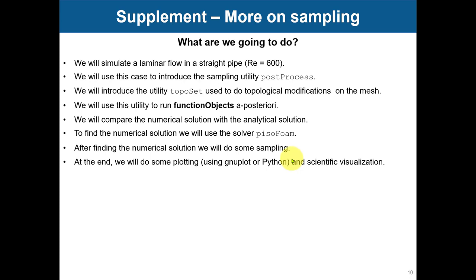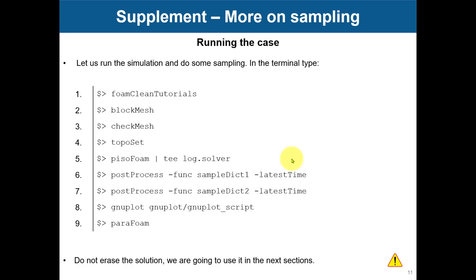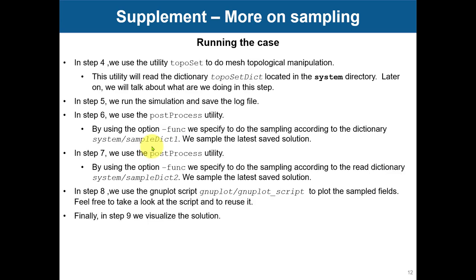You can obtain those surfaces using any software, or even ISO surfaces that you can obtain with functional objects — that is in the next supplement. So see that you run this case using the topoSet tool. For info on topoSet, you get more information, and in this slide there is a short explanation of what we're doing, but here we're just selecting a group of cells. In that group of cells, we can do sampling operations.